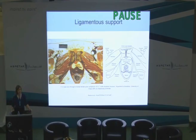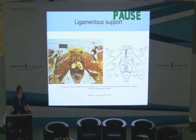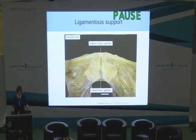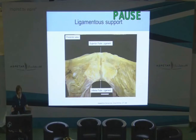If we think about the support around the joint, we can think of static ligamentous structures. This is an anatomical preparation — you can see the anterior pubic ligament across the front, and posteriorly the posterior pubic ligament, and the connective tissue lying in front of the joint. From a posterior aspect, you can see the superior pubic ligament, which is quite narrow but reasonably broad, and the inferior or arcuate pubic ligament, which is really important for stabilising the inferior aspect of the joint.